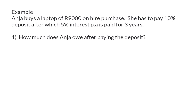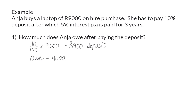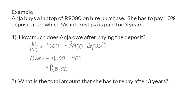Here we first need to determine what the deposit amount is. We were given that she has to pay 10% of the original amount of 9,000 rand, which means she will pay 900 rand as a deposit. After this, she still owes 9,000 rand minus the 900 rand deposit that she paid, which means she owes 8,100 rand.